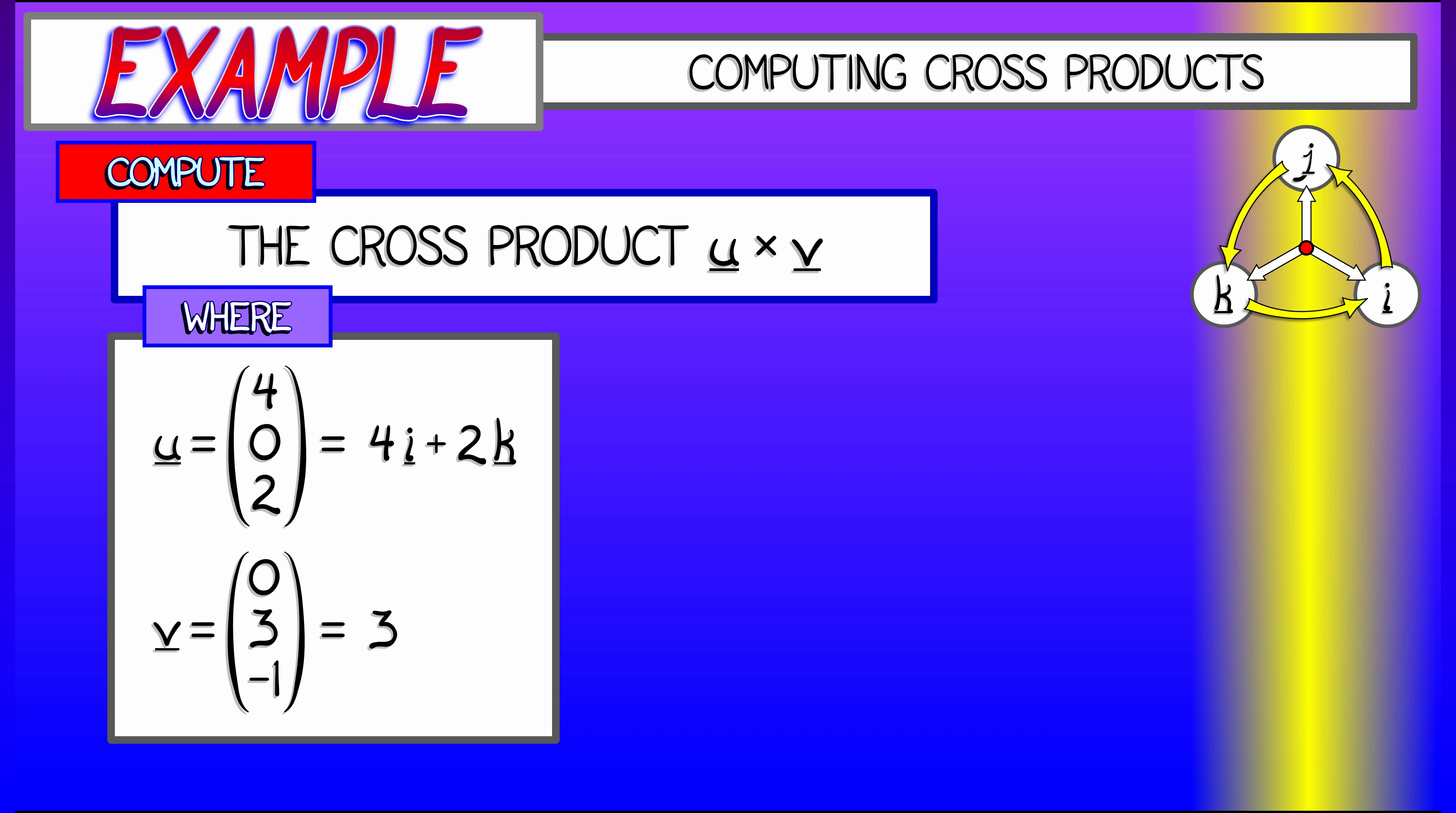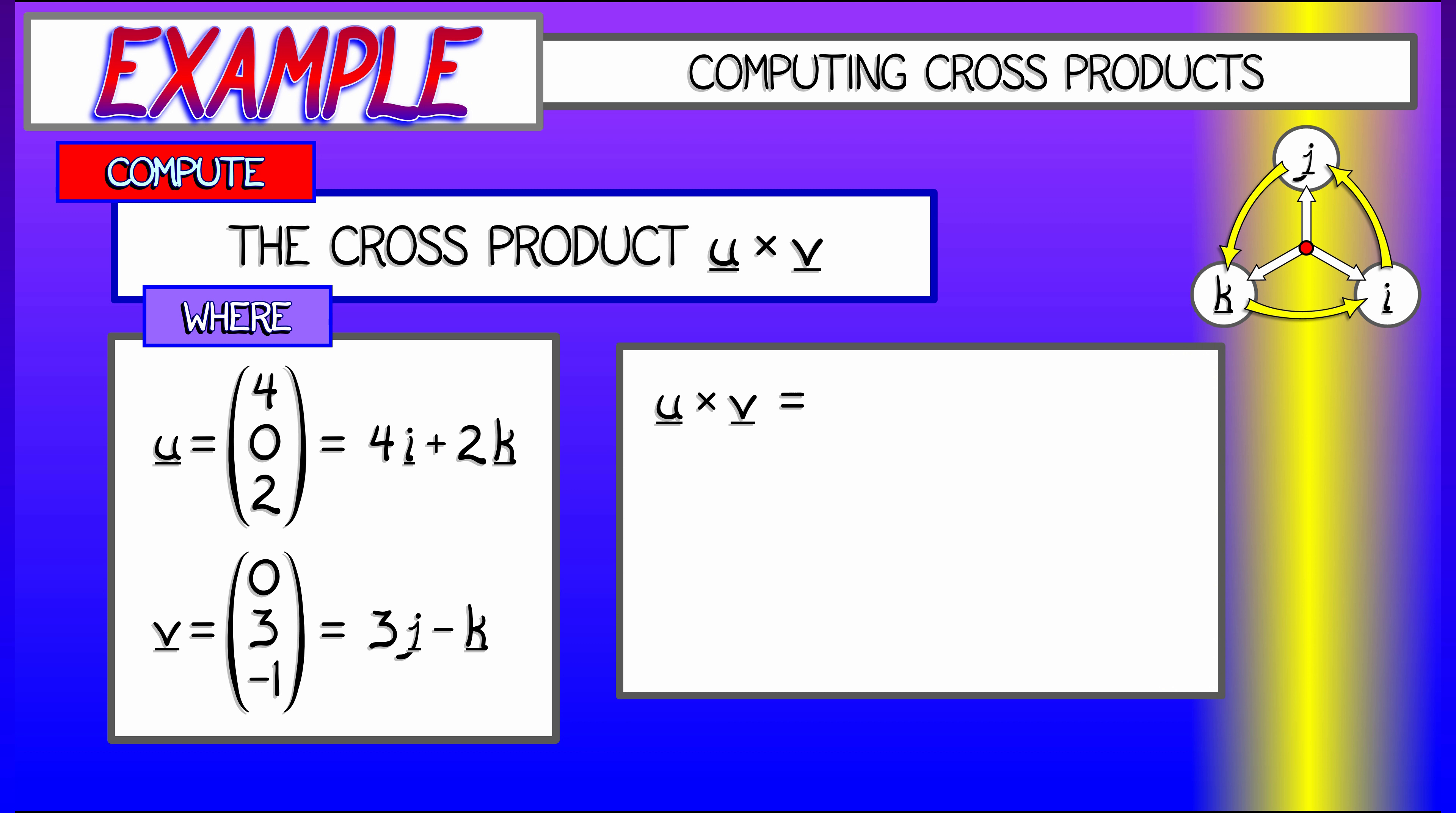Simply write these vectors out in terms of their i, j, k components, and then perform the multiplication as if you were multiplying polynomials together.